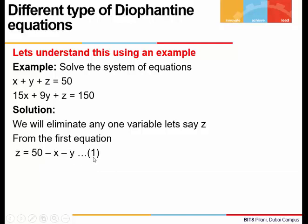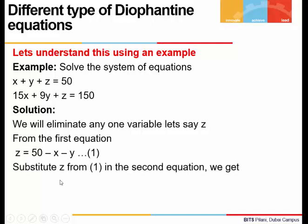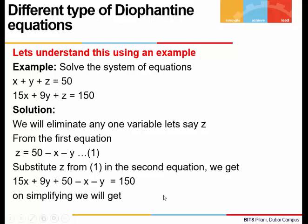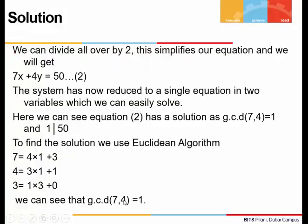Let's call this equation 1. We will put this value of z in the second equation, and that will give us, on simplifying, 14x plus 8y is equal to 100. We can divide the whole equation by 2 to simplify it further, and that will give us 7x plus 4y is equal to 50.